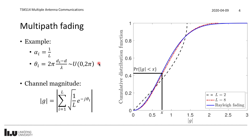With two independent paths of different phases, we get the dashed CDF curve. With eight paths, we get the red curve. The blue curve — very close to the red — corresponds to approximating g as complex Gaussian with zero mean and variance one, which is called Rayleigh fading. This is a very good approximation as soon as we have around five to eight or more paths, so Rayleigh fading appears naturally in practice.